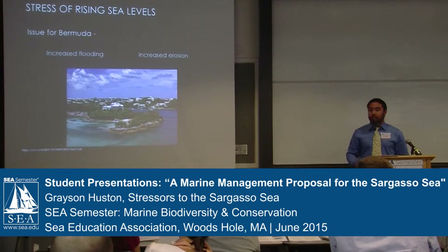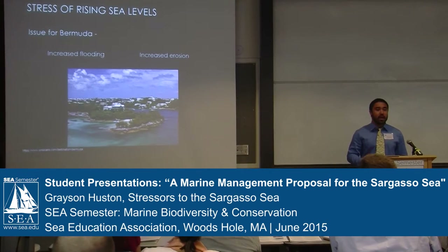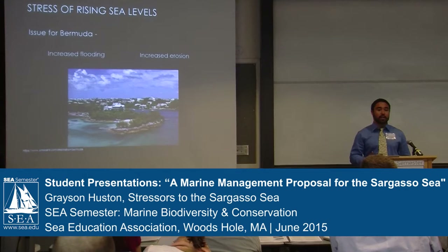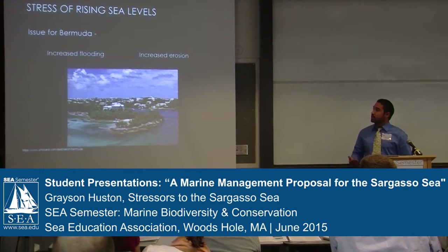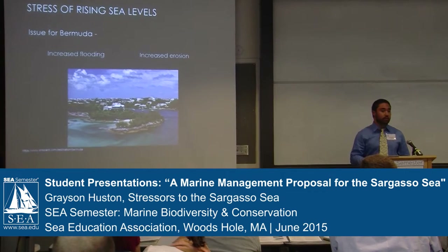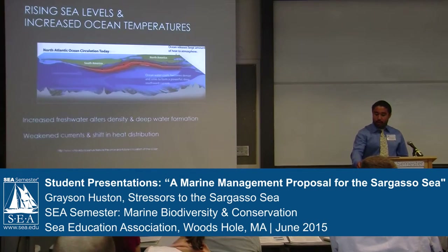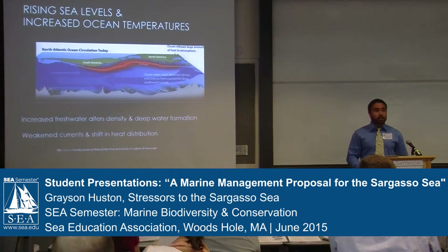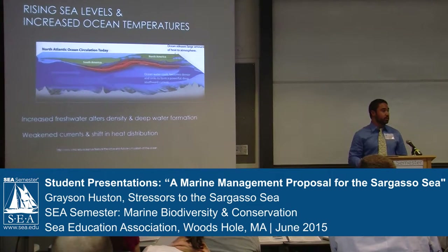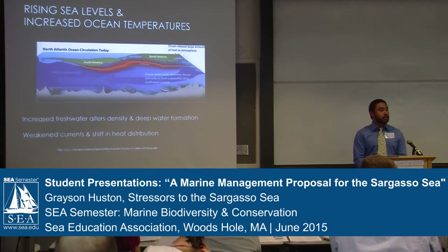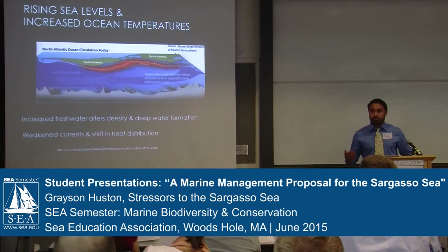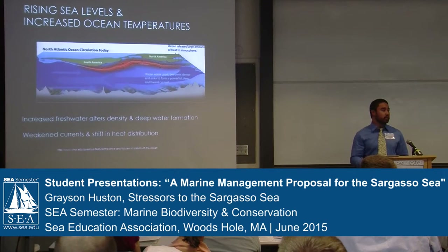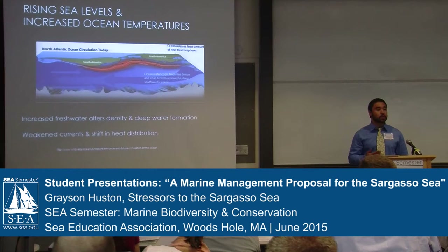The last major stressor of climate change to the Sargasso Sea is rising sea levels. For starters, this poses a major problem for the island and people of Bermuda, as rising sea levels can cause increased flooding as well as increased erosion for many coastal areas. But even more important is that rising sea levels, when combined with increased ocean temperatures, has the potential to change currents all throughout the Atlantic Ocean. Increased inputs of fresh water in the North Atlantic can alter density and deep water formation, causing water to sink not as deep and not as far, thus altering heat throughout the entire Atlantic Ocean as well as the strength of many currents.